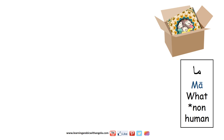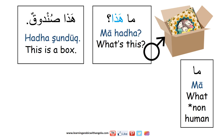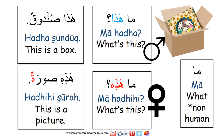ما means 'what' and it's mainly used for non-humans. ما هذا؟ — What's this? هذا صندوق — We used هذا as a demonstrative pronoun because صندوق is masculine. هذا is masculine and صندوق is a masculine noun. ما هاذه؟ — What's this? We used هاذه because سورة is a feminine noun and it ends with تاء مربوطة, which is a feminine sign in Arabic. هذه سورة.